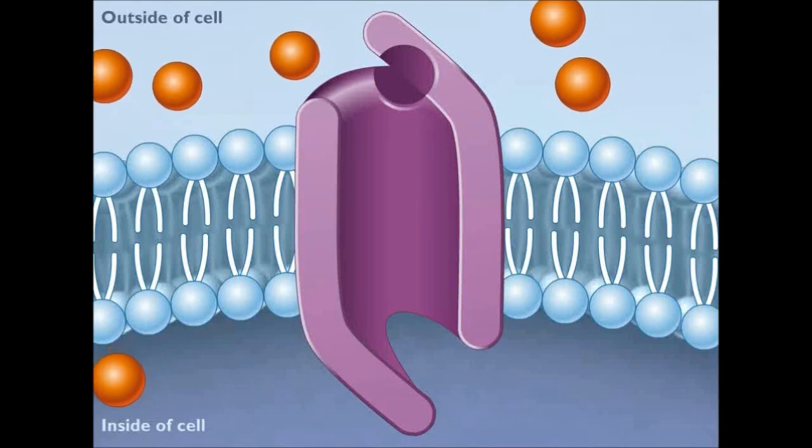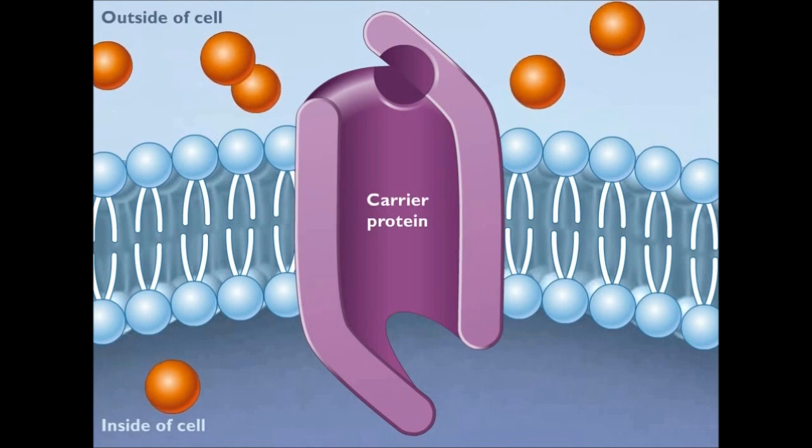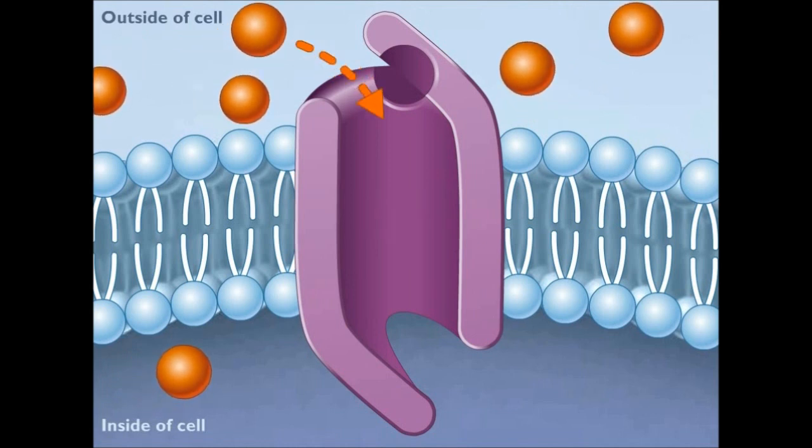In the process known as facilitated diffusion, a special carrier protein with a central channel acts as a selective corridor which helps molecules move across the membrane.